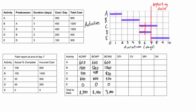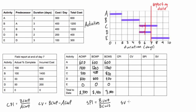CPI is the cost performance index, CV is the cost variance, SPI is the schedule performance index, and SV is the schedule variance. For the overall project, CPI equals BCWP divided by ACWP: 2,400 divided by 2,700 gives us 0.889. A CPI less than 1 means the project is over budget.